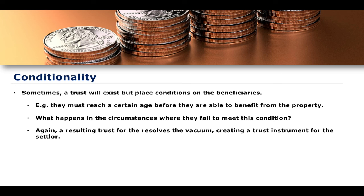This is very similar to the previous example in the sense that there is no clearly identifiable beneficiary. In the first example, there simply is no beneficiary or certainty of objects at creation. In this case, there is a certainty of objects, but a condition is placed on that beneficiary and they fail to meet it. So at the point the condition expires — say, when they reach 18 — there is no person there to benefit from that property because they have died. This is where the resolution of the vacuum arises, owing to the principle that equity abhors a vacuum.